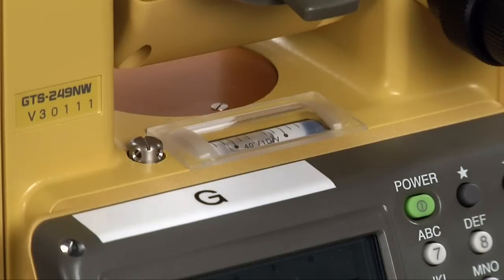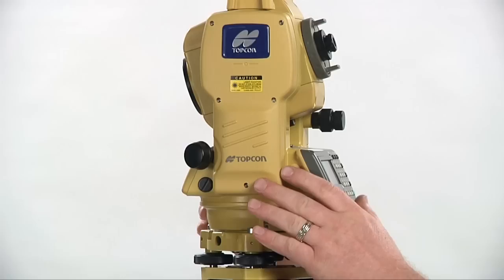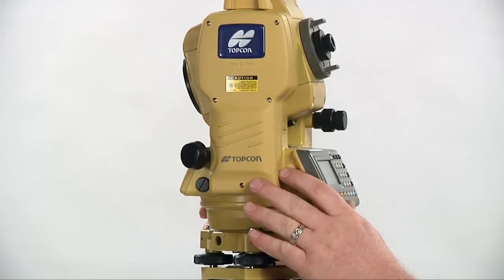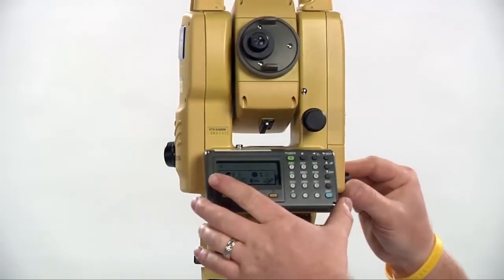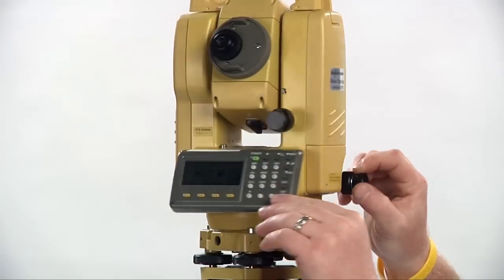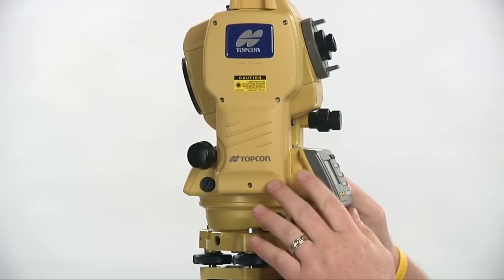Now that the laser plummet is re-centered, re-level the plate level. You're never satisfied until the plate level is level no matter which way you rotate the machine and the laser plummet continues to remain centered over the point.